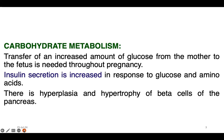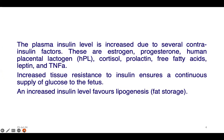There is hyperplasia and hypertrophy of beta cells of the pancreas. During pregnancy, because of this hyperplasia and hypertrophy, insulin secretion increases in response to glucose and amino acids. The plasma insulin level is also increased.